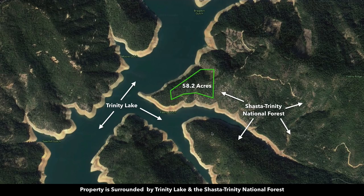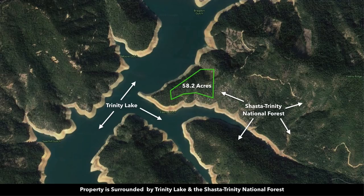Here's another satellite image with the property outlined in green. This property boundary is consistent with the county GIS mapping system, as well as the plat map for the parcel, the interactive map, and multiple survey markers located on the property, which we'll show you in subsequent photos.